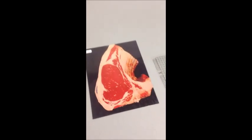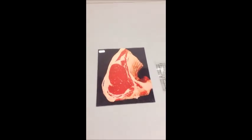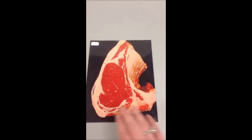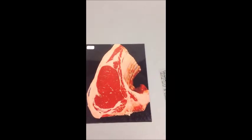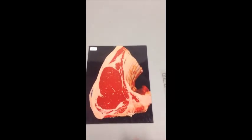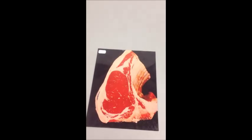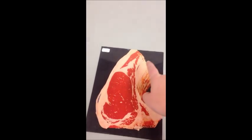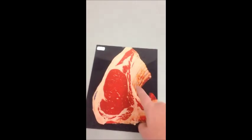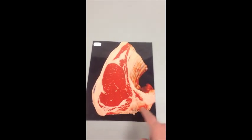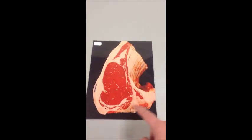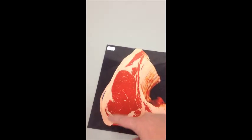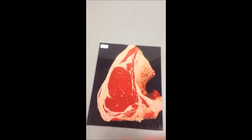We do a lot of our yield grade practice from pictures, and this is a picture of a ribeye. This would have been cut at the 12th and 13th rib, which is the big muscle that goes down the back of the animal. Over here you can see the ribs of the carcass, and this is where the backbone would have been split. The back skin would have laid over this fat area.